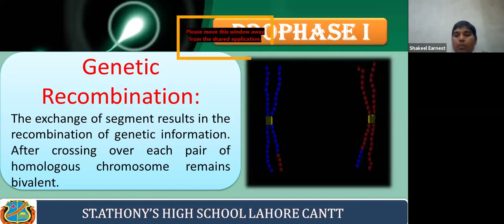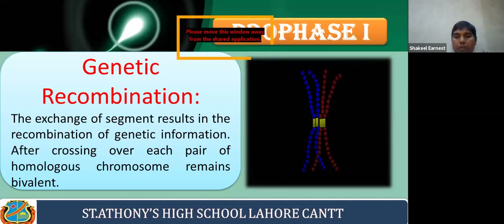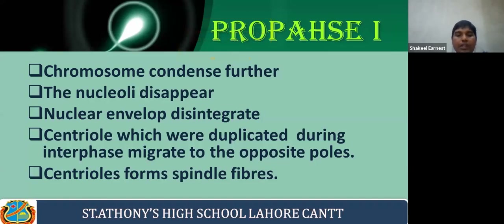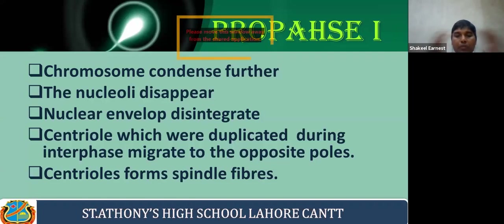After crossing over, each chromosome still contains two sister chromatids, and chromosomes remain present in bivalent form. Further characteristics of prophase one: chromosomes condense, the nucleolus disappears, the nuclear envelope disintegrates, and centrioles which were duplicated during interphase migrate to the opposite poles, forming spindle fibers as they move apart.